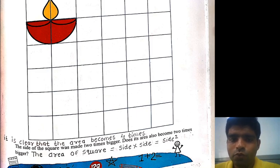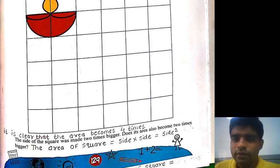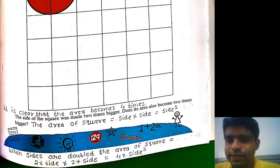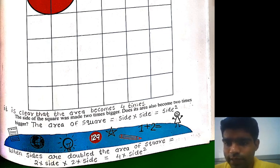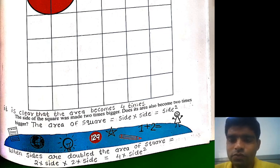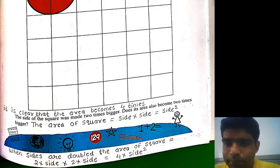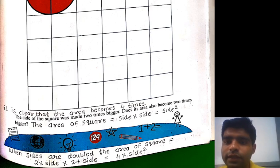When the side is doubled, the area also becomes bigger. The area of a square is equal to side multiplied by side, which gives us side squared. All four sides of a square are equal, so the area of a square equals side × side = side².